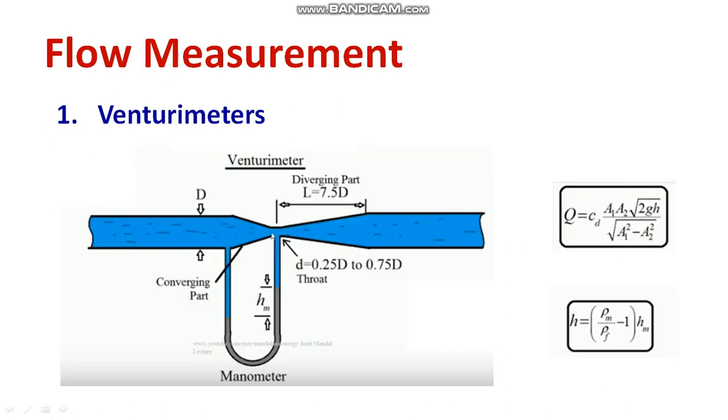Here, you are going to insert venturi meter at the conduit where you are going to calculate the discharge using the following formula. CD into A1, A2 into square root of 2GS divided by square root of A1 square minus A2 square. You can identify that CD is the coefficient of discharge. And here, you can calculate the height using density of mercury divided by density of fluid minus 1 into HM, mean height.